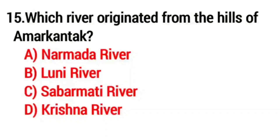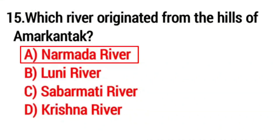Question No. 15. Which river originated from the hills of Amarkantak? Answer Option A: Narmada river.